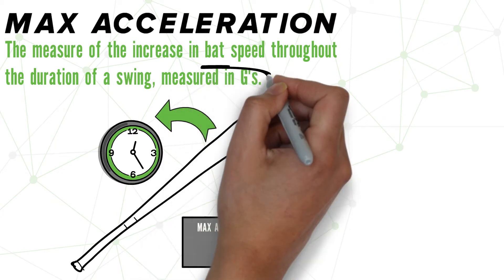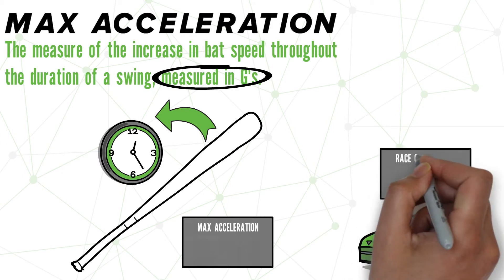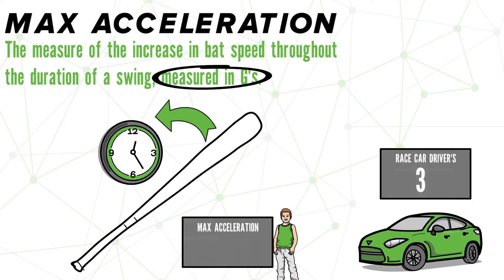So, we say that this metric is measured in Gs. You may be familiar with this unit for roller coasters or rocket ships. But to put it in perspective, a race car driver will experience 3 Gs when going around a turn. In comparison, a 10 year old with a pretty good swing can generate up to 25 Gs of force.